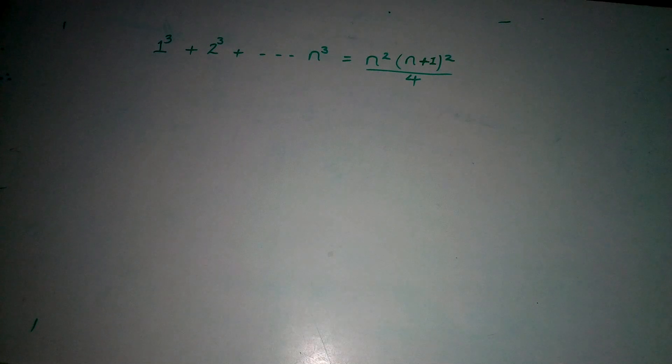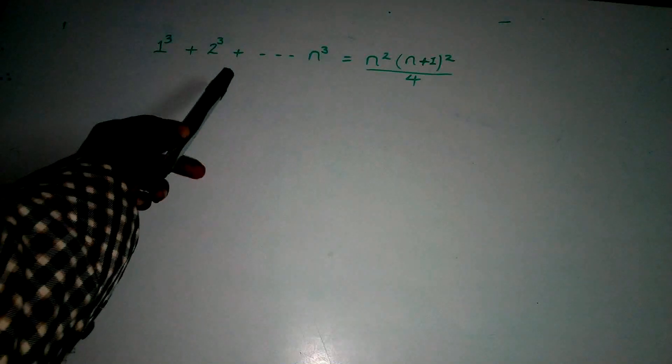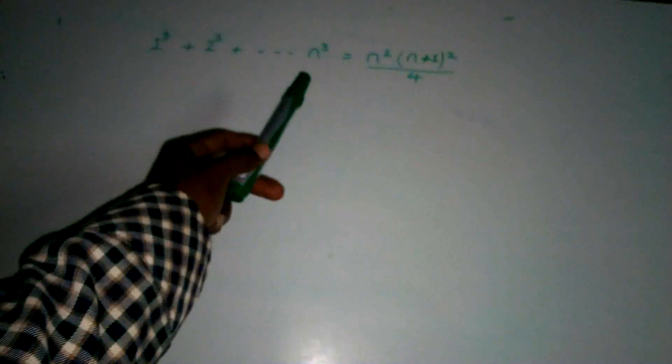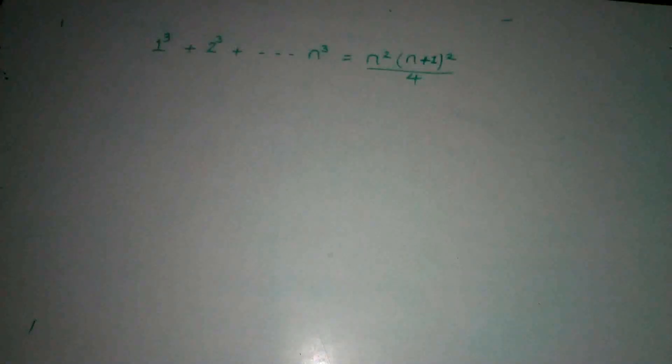Today we will prove using mathematical induction: 1 to the power of 3 plus 2 to the power of 3 plus dot dot dot n to the power of 3 is equal to n to the power of 2 in the bracket n plus 1 square over 4.